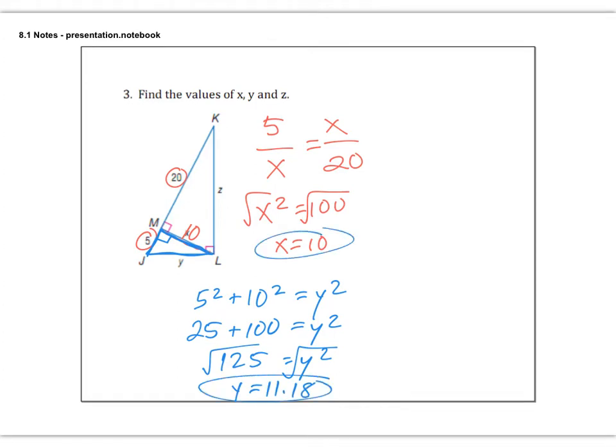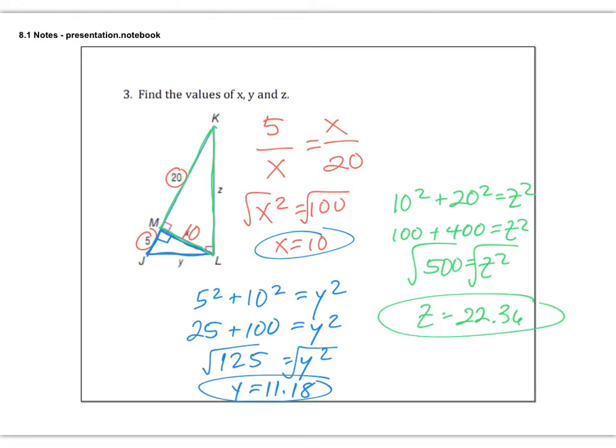Last but not least, let's find z. Now we're going to use this medium-sized triangle up here in the green, and we can do the Pythagorean theorem again. We have another right triangle. So we can go 10 squared plus 20 squared equals z squared. We have 100 plus 400 equals z squared, which gives us 500. Take the square root, and z ends up at 22.36. So just to recap, we did the geometric mean once to find that altitude, and then we did Pythagorean theorem, Pythagorean theorem.